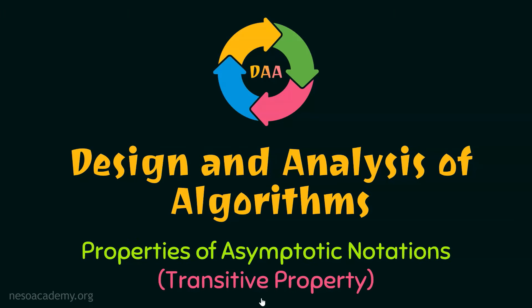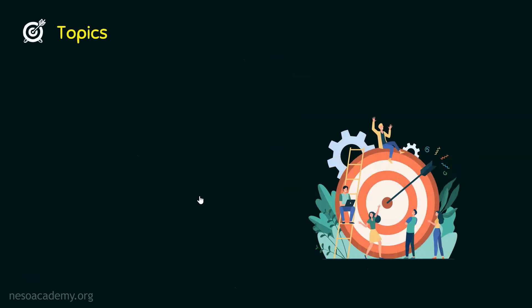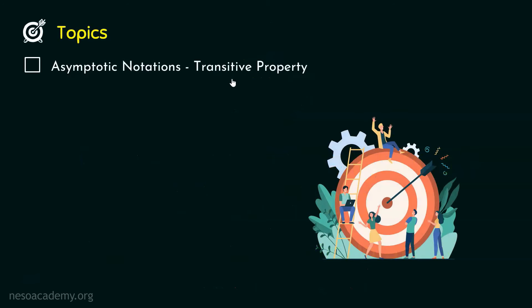Transitive Property of Asymptotic Notations. In this presentation, we will discuss the transitive property of asymptotic notations. Let's get started and see the topics. The topic is the asymptotic notations transitive property. We will study the transitive property of asymptotic notations in this lecture. Let's get started and see the transitive property first.